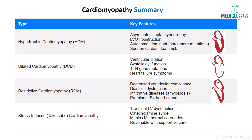Restrictive cardiomyopathy is another important type, characterized by decreased ventricular compliance and preserved systolic function. This form is often associated with infiltrative diseases, such as amyloidosis, which lead to diastolic heart failure. Key clinical features include elevated filling pressures and a prominent S4 heart sound, which are crucial for recognizing this condition on exams.